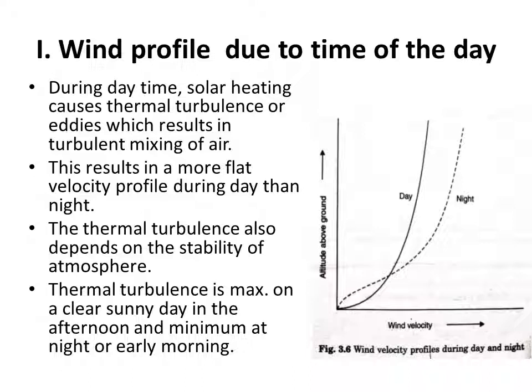The thermal turbulence also depends upon the stability of the atmosphere. The stability of the atmosphere means the atmosphere may be unstable, neutral, or stable, and that also affects the wind profile. The thermal turbulence is maximum on a clear sunny day in the afternoon and minimum at night or early morning, when the amount of solar radiation is less and the wind is comparatively less.